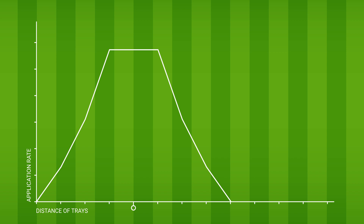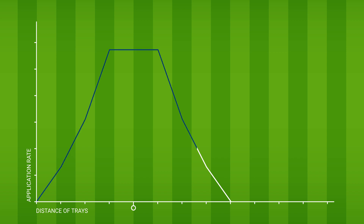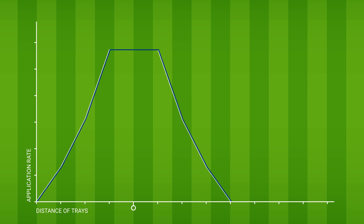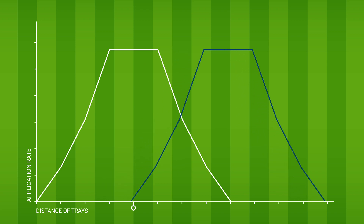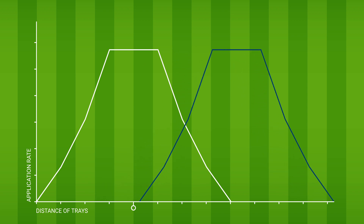As we need to achieve a uniform application rate, it is important to determine the optimal overlap bout width. The easiest way to do this is to trace the shape of your graph onto tracing paper, place the trace exactly over the original graph, and then start to slide the traced shape sideways until it intersects halfway down the triangular slope of the original graph. The distance between the center of the original and the traced graphs is the optimal bout width. Adopting an optimal bout width is important as it avoids alternate strips of under and over fertilized turf, which become very obvious once the grass plants take up the fertilizer.